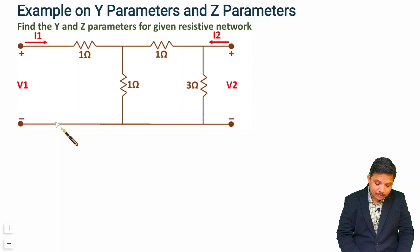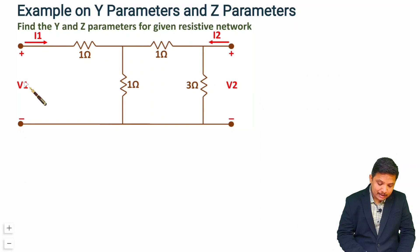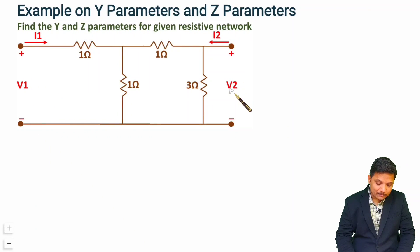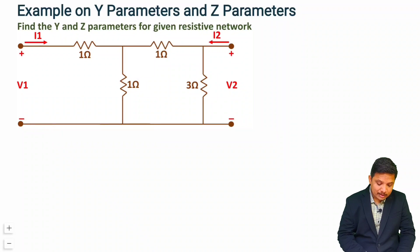In my earlier video I solved a similar network. For Y parameter calculation, I provided a short circuit at port 2 and calculated I1/V1 and I1/V2. Then I shorted port 1 and calculated I2/V1 and I2/V2. For Z parameters, I kept port 2 open (I2 = 0) and calculated V2/I1 and V1/I1, then kept port 1 open (I1 = 0) and calculated V1/I2 and V2/I2.